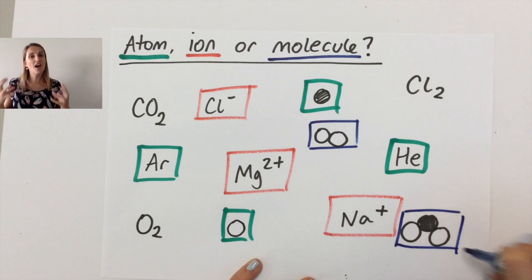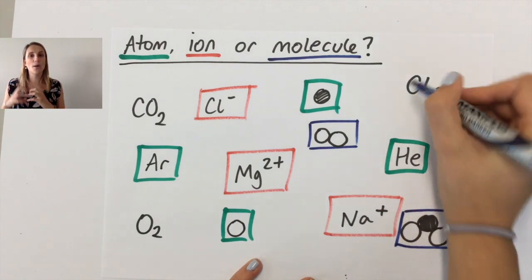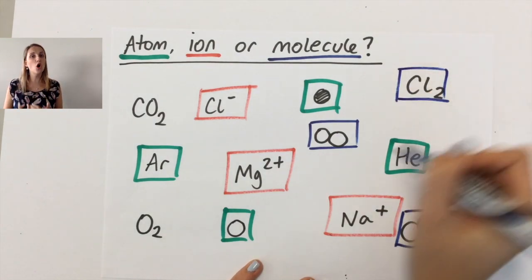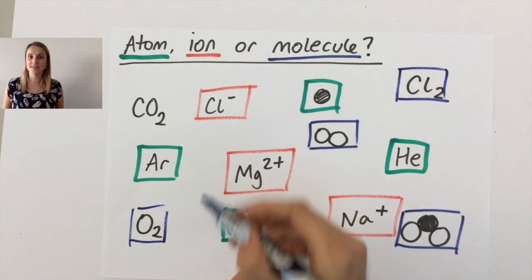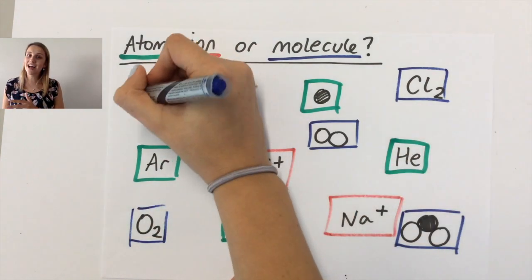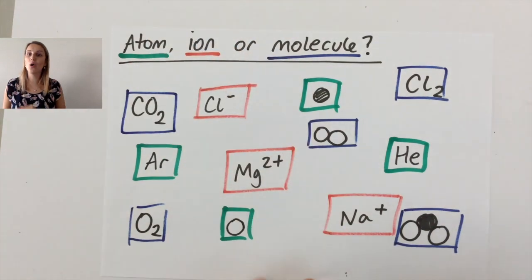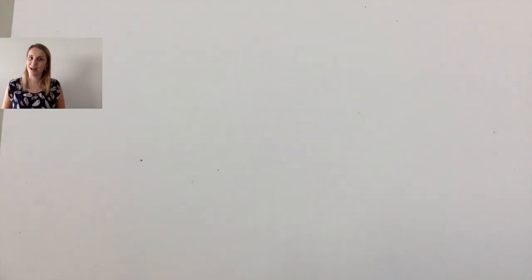In terms of the other ones, what I'm looking for is two non-metals that are bonded together. Because remember, non-metals always engage in covalent bonding. So CO2, Cl2 and O2 are all examples of molecules as well.